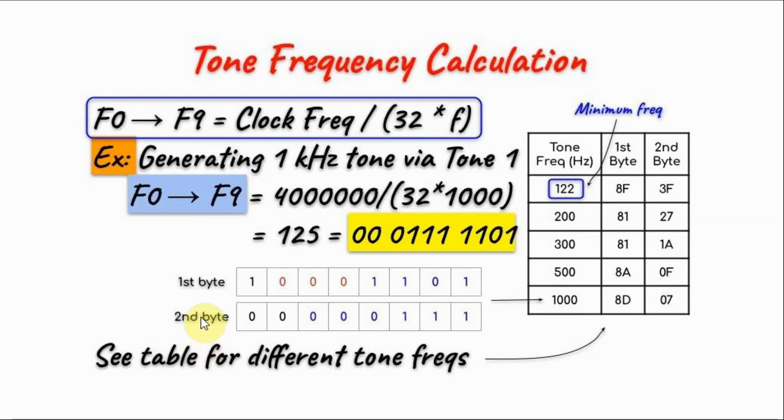Next, we determine the two bytes we want to send to the IC. In the first byte, this most significant bit is always 1, and these three bits here determine the type of control register. Since we are using channel 0,